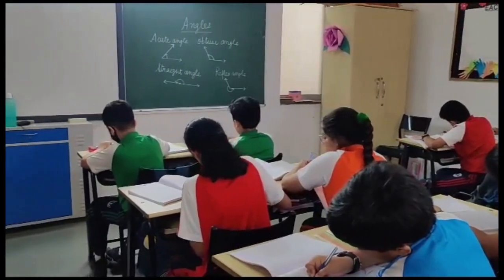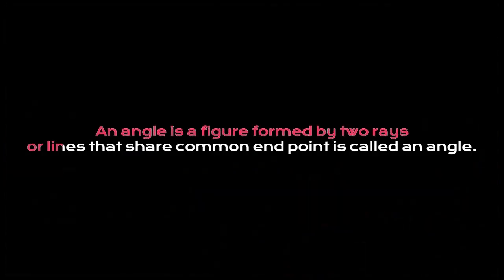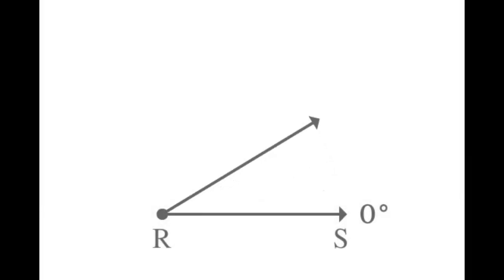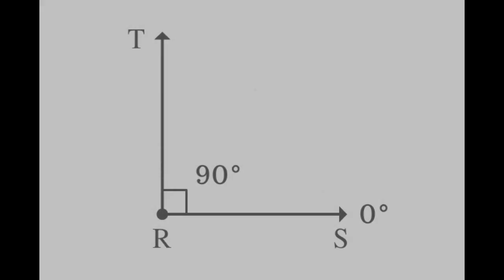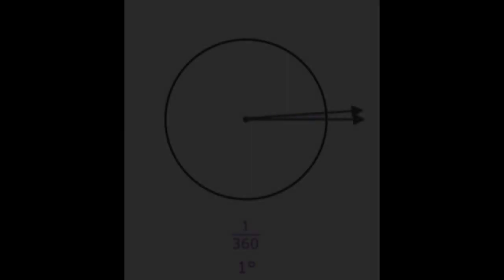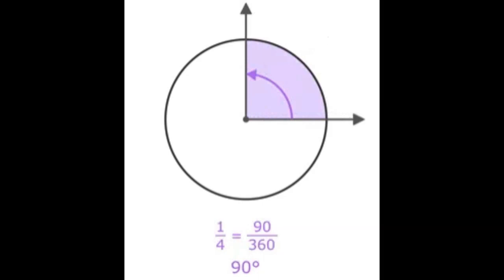The concept of angles is introduced during the mathematics class by the academic teacher. A figure which is formed by two rays or lines that share a common endpoint is called an angle. The measure of an angle depends upon the opening between its arms — the more the opening between the arms, the more the measure of the angle. The number of degrees from one arm of the angle to the other determines the measure and classification of an angle.